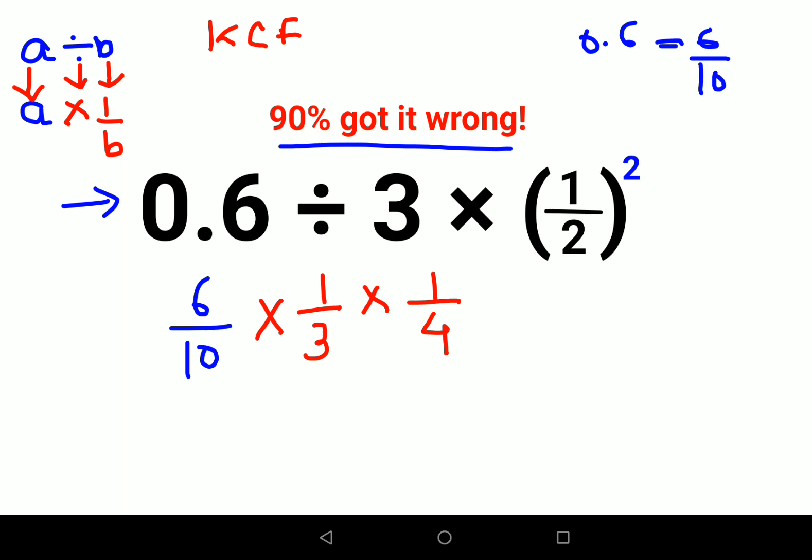So now let's start with canceling. This is 1 and this is 2, 2, 1, and 4. Sorry, not 4, it is actually 2. So the final answer is 1 upon 2 into 10, that is 20.